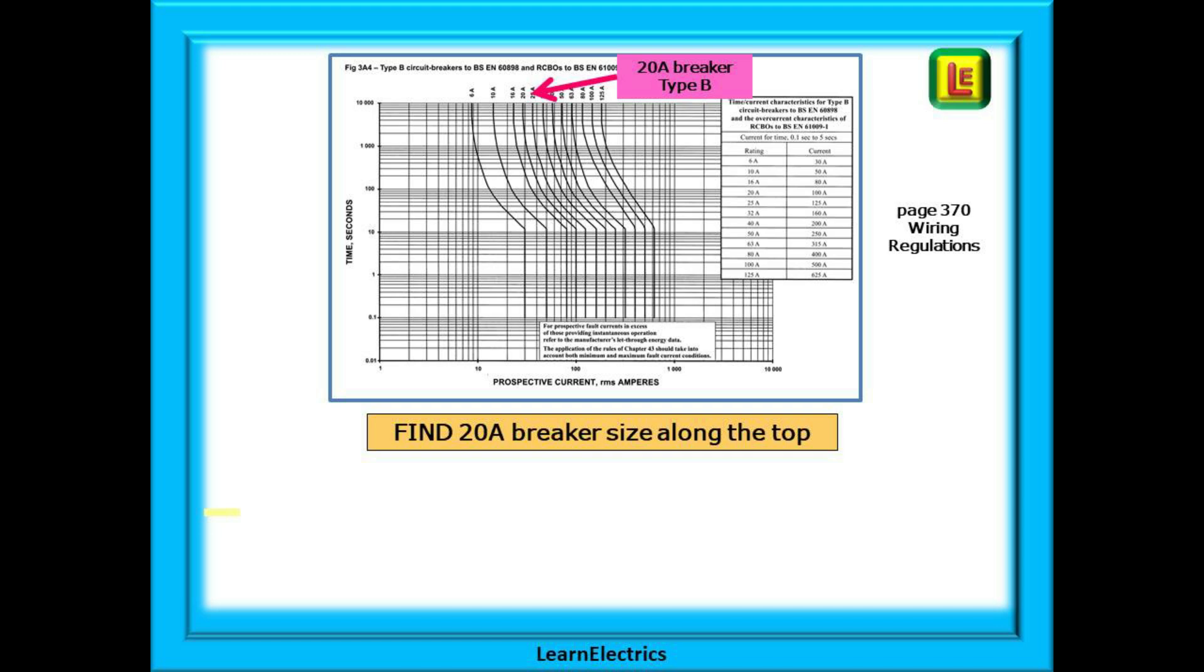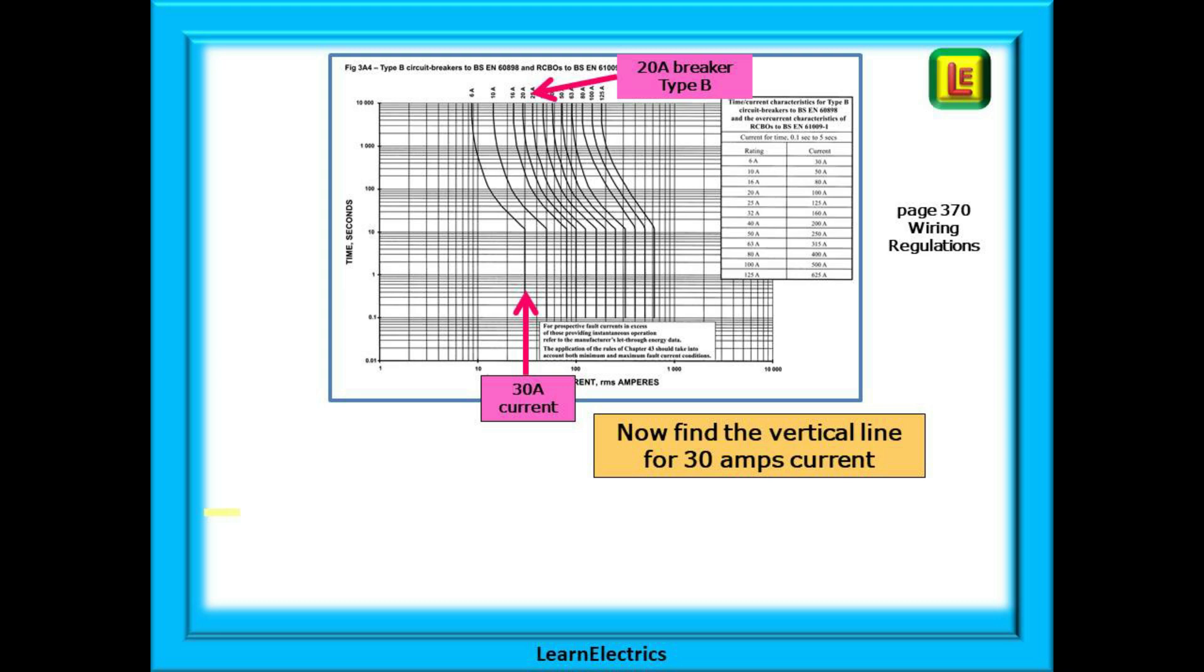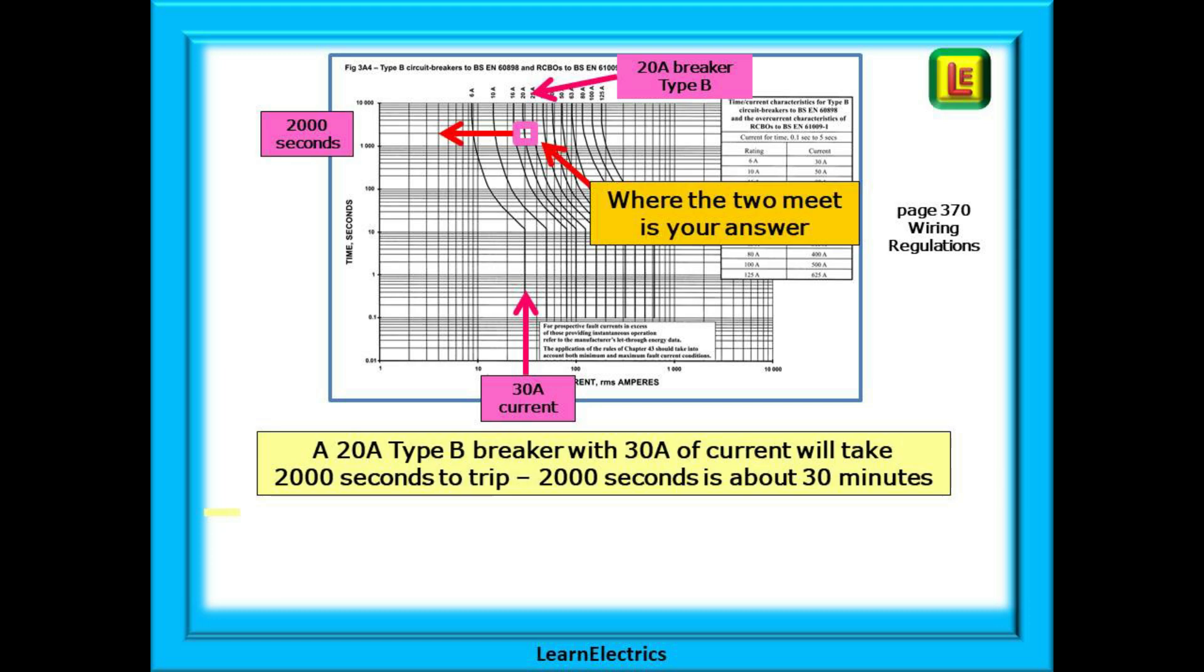First, find the response curve for a 20 amp breaker along the top. Now find the vertical line for 30 amps along the bottom. Follow this 30 amp line upwards until it crosses the curved line for a 20 amp breaker. Where the two lines meet, there is your answer.